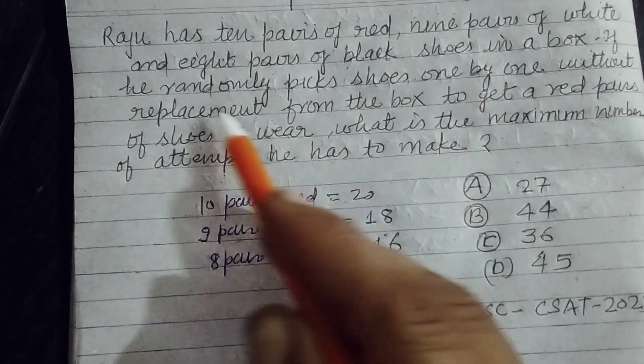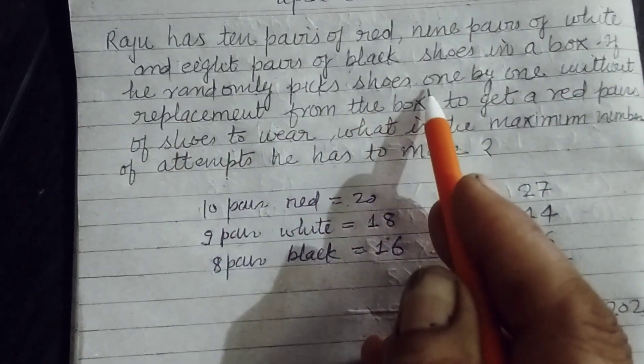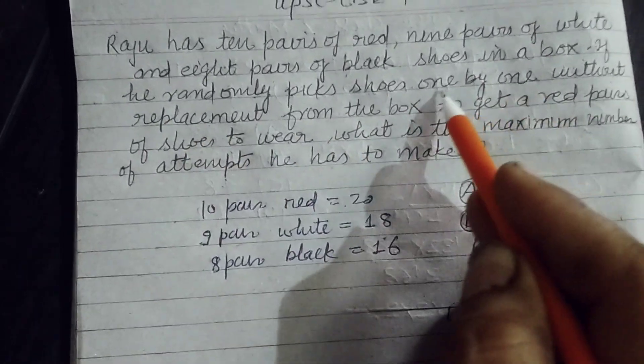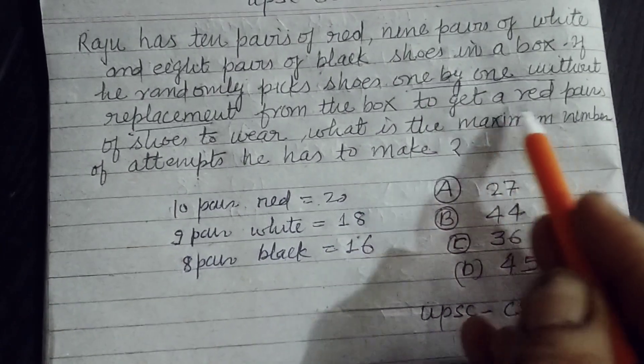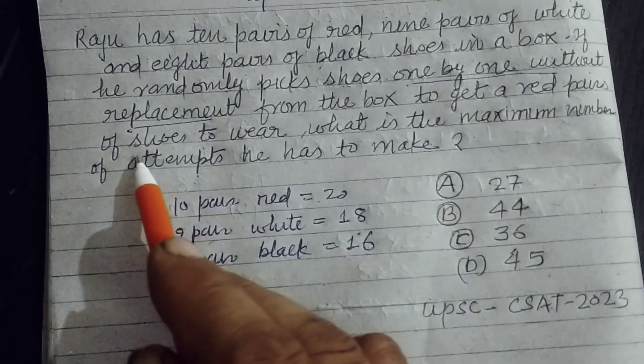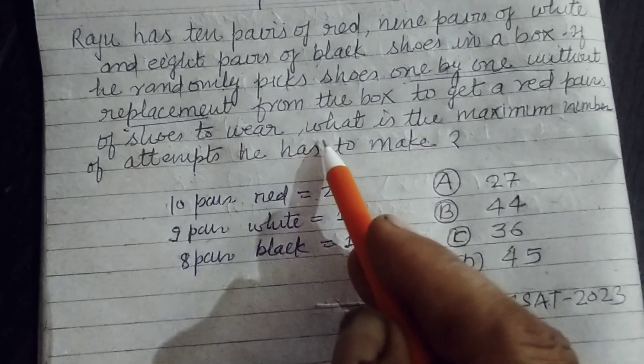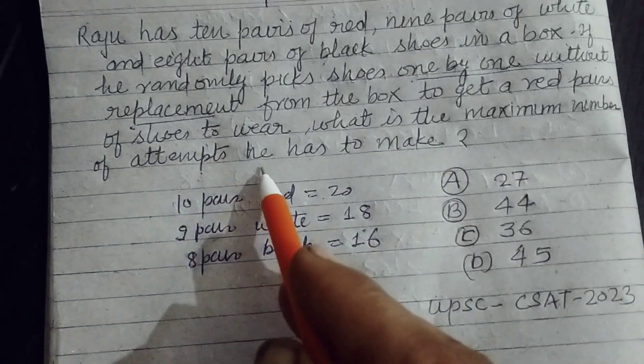Secondly, in a box, if he randomly picks shoes one by one without replacement, this is important, one by one without replacement from the box to get a red pair of shoes to wear, what is the maximum number of attempts he has to make?